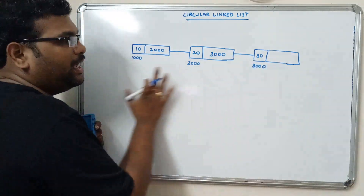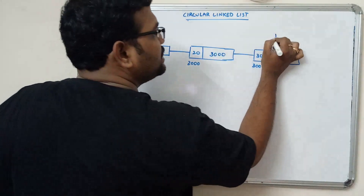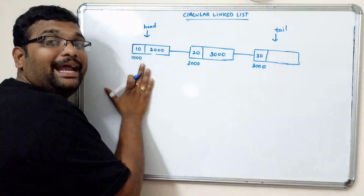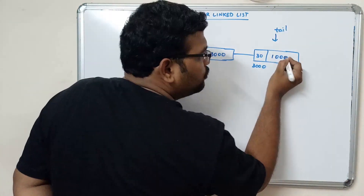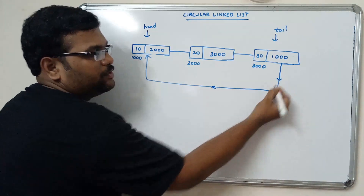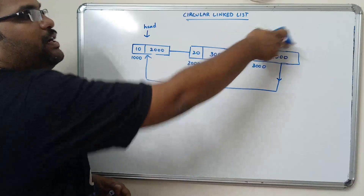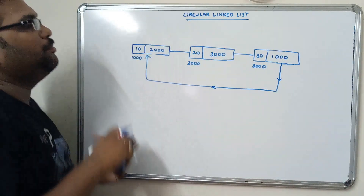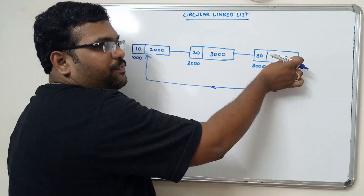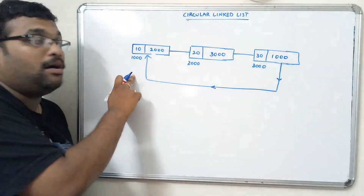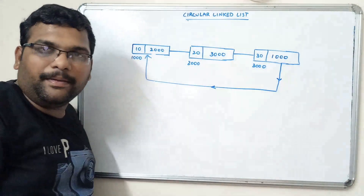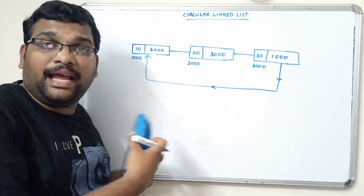For a circular linked list, instead of placing null in the last node's address field, we place the address of the head. The head address is 1000, so placing 1000 in the tail's address field links it back to the first node. This is called a circular linked list. While creating the list we have to keep updating the address field — that is the only difference between a single linked list and a circular linked list.